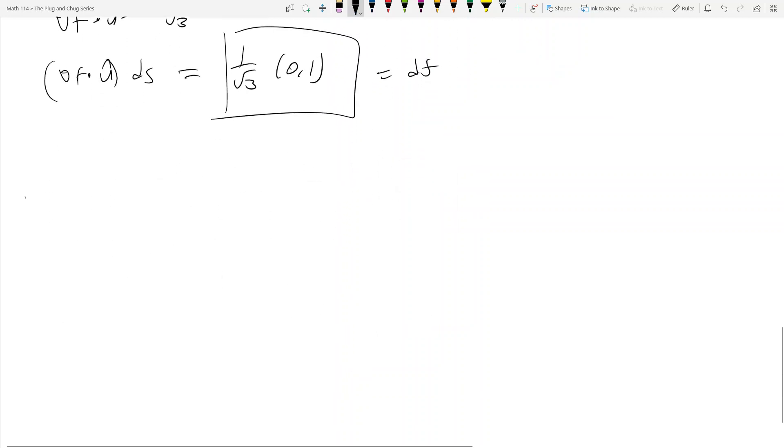The next problem is 14.6.42, and it's find a linearization of f of x, y, z equals sine of xy over z at, and let's just do part a, which is pi over 2, 1, 1. So I want to find, it's essentially a linear approximation of this functional value at this point in space. So how do we do this?